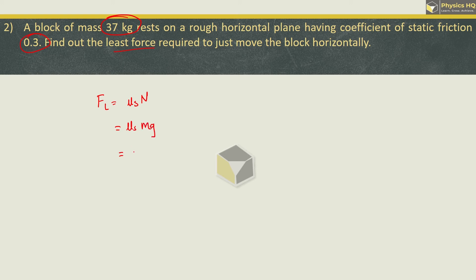So mu s into normal reaction is M into G. Let us put all the values. Coefficient of static friction mu s is 0.3, mass is 37, and G value is 9.8. When you multiply this, it will be 108.8 N. Hope you all understood this.